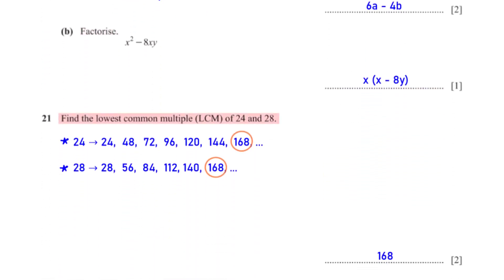Find the lowest common multiple of 24 and 28. First we list the multiples of 24 and 28. From these lists we see that the lowest common multiple of the two numbers is 168.